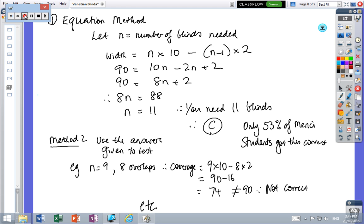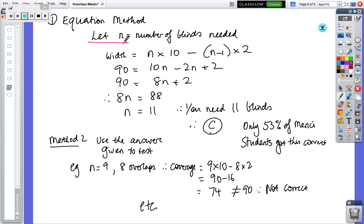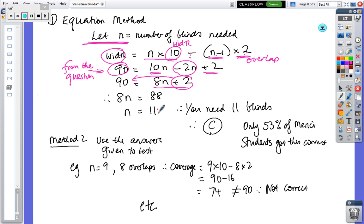Okay. So we're back again. So if you're going to be a good mathematician, we don't know what the number is. So we say let n equal the number of blinds and the width that's covered is the number of blinds times how wide each blind is and one less blind times the overlap. So that's the overlap. And this is the width of the blind. And we know that the answer is 90 centimeters and that's on the question. So we've got n times 10 is 10n and minus n times 2 is minus 2n. Minus times a minus times a plus is a plus. So you end up with 8n plus 2. Then subtract 2 from both sides and you end up with 11 blinds. And again, 53% of students getting it right is not a good number.